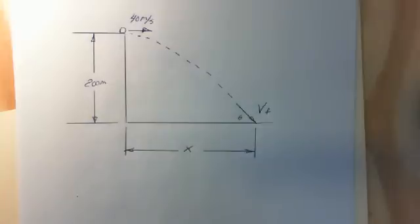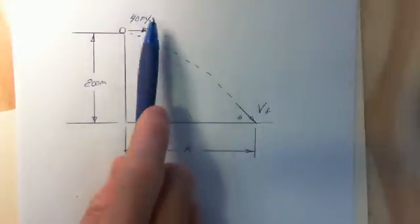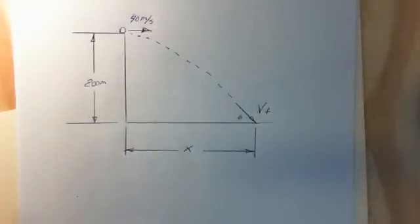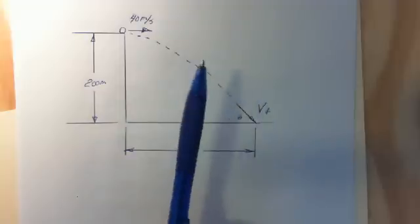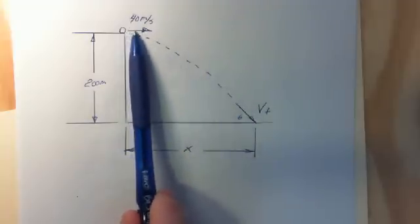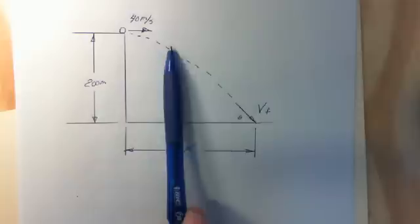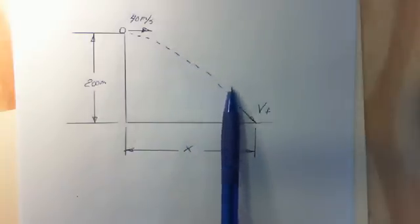To work these problems, what you need to realize first is that the horizontal velocity and the vertical velocity are completely independent. You want to work those separately. So what we're going to do with this problem, we're going to make it just like we've done some earlier free fall problems. We want to find out how much time will the object be in the air. And to do that, the 40 meters a second has nothing to do with how long the object is going to be in the air because it's going to be 40 meters a second, horizontal velocity, all the way through this parabola until impact.